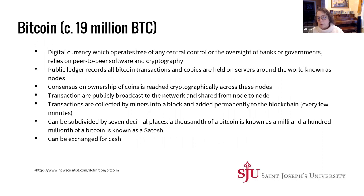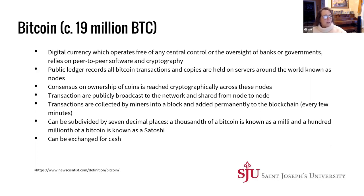There are around 19 million bitcoins in circulation. Bitcoin operates free of any central control — everything is worth what the collective body says it's worth, which is both exhilarating and deeply frightening. It relies on cryptography and peer-to-peer networks, and it's a public ledger that records all Bitcoin transactions. Copies of this ledger are held on servers all around the world.